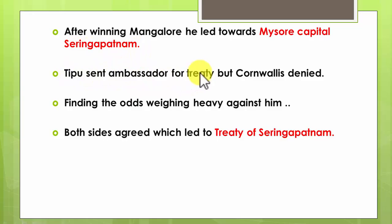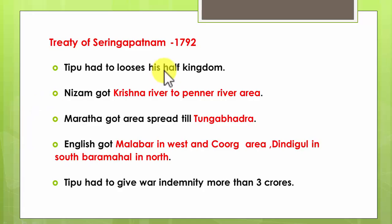During the third Anglo-Mysore war, after winning Mangalore, the English marched towards the Mysore capital Srirangapatnam. Tipu tried to protect himself and sent ambassadors for a treaty, but Cornwallis denied. Finding all odds weighing against him, Tipu eventually agreed, and the Treaty of Srirangapatnam was signed in 1792. According to this treaty, Tipu had to lose half of his kingdom.